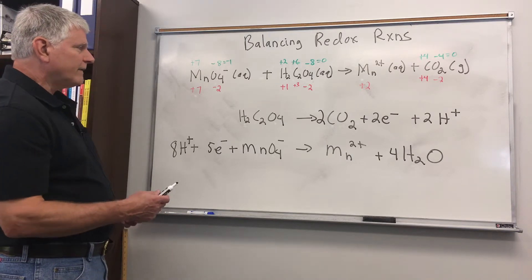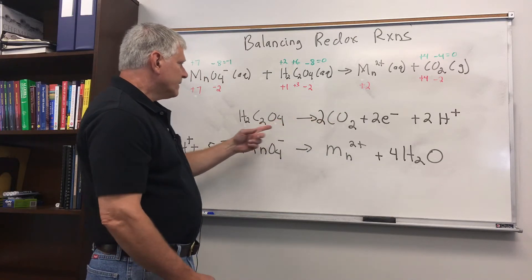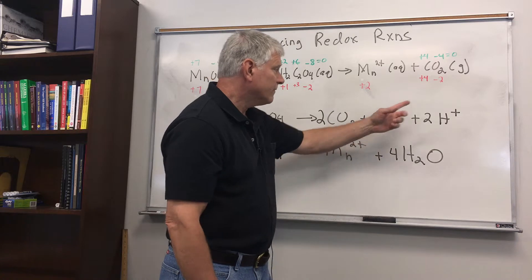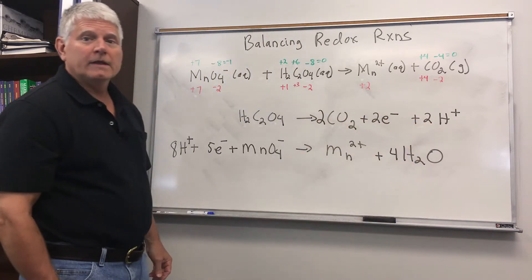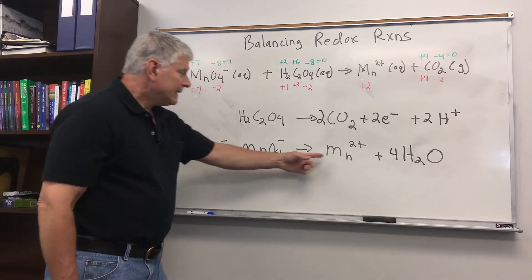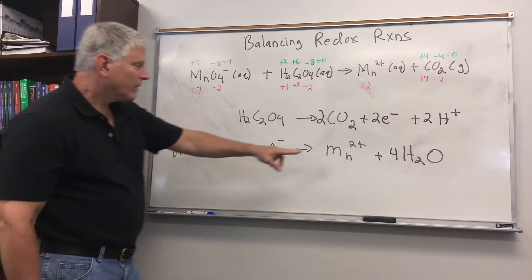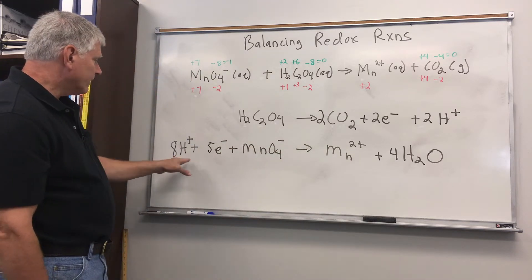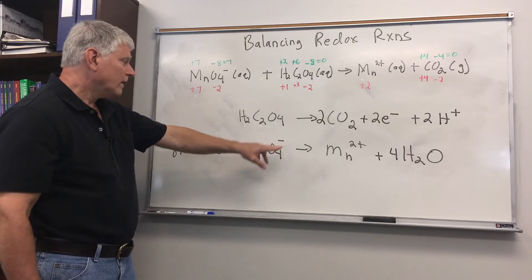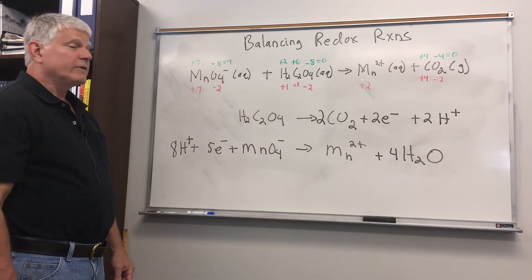So now we have everything balanced — let's check. For the oxidation half reaction: 2 carbons, 4 oxygens, 2 hydrogens. The charge is 0 on the left and negative 2 plus 2 equals 0 on the right — charge balances. For the reduction half reaction: 1 manganese, 4 oxygens, 8 hydrogens. We have a plus 2 charge on the right, and on the left 8 plus 5 minus 1 equals 2 — plus 2 charges on both sides, so charge balances.